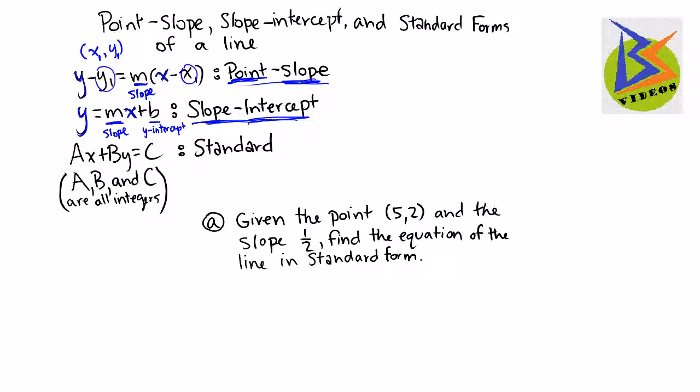Now, similar to that, but a little bit different, is this idea of a standard form. Notice how we have a capital AX plus BY equals C. And we note that A, B, and C are all integers, meaning they are positive and negative whole numbers. So we can't have fractions or decimals out in front of those variables.